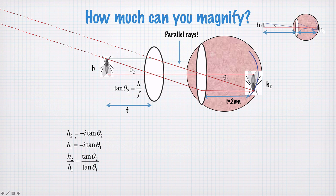So, h2, that's the height of this object, of this image over here, is going to be negative i tan theta2. We have h1. Remember h1? That was without the lens. h1 is equal to negative i tan theta1. So the ratio of h2 to h1 is the ratio of the tangents of these angles.